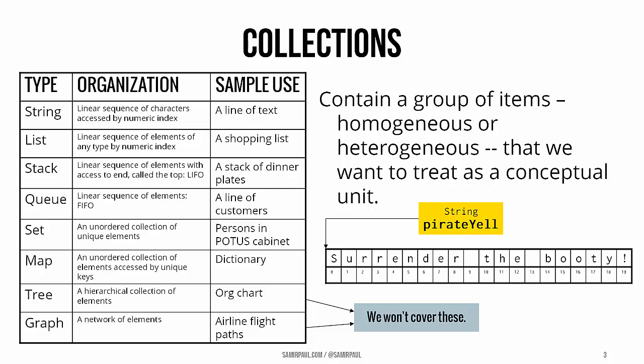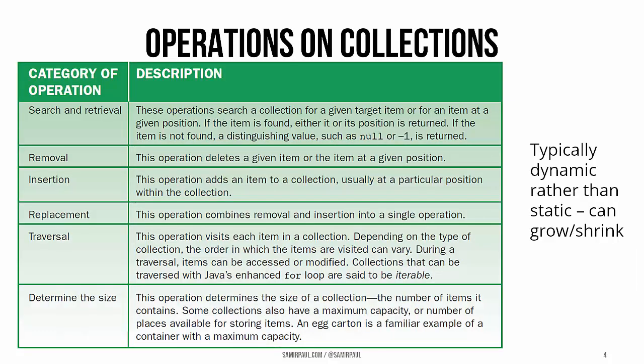Take a look at this chart of some different types of collections, some different data structures that you might use. You'll treat most of these in greater detail in the future. Now, if you'll recall from working with arrays, one of our great frustrations is that arrays are statically sized, which means we decide initially how big they're going to be, and then they're stuck at that size forever. Collections are typically dynamic rather than static, which means they can grow or they can shrink with whatever our problem demands.